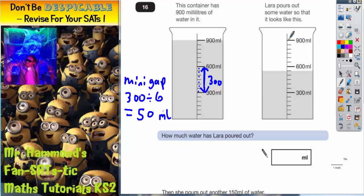Now that we know each mini gap is 50, we can count how many lots of 50 she has poured out. Starting from 900 to this next gap she would have poured out 50, 100, 150, 200, 250, 300, 350. So it looks like she's poured out 350 milliliters.